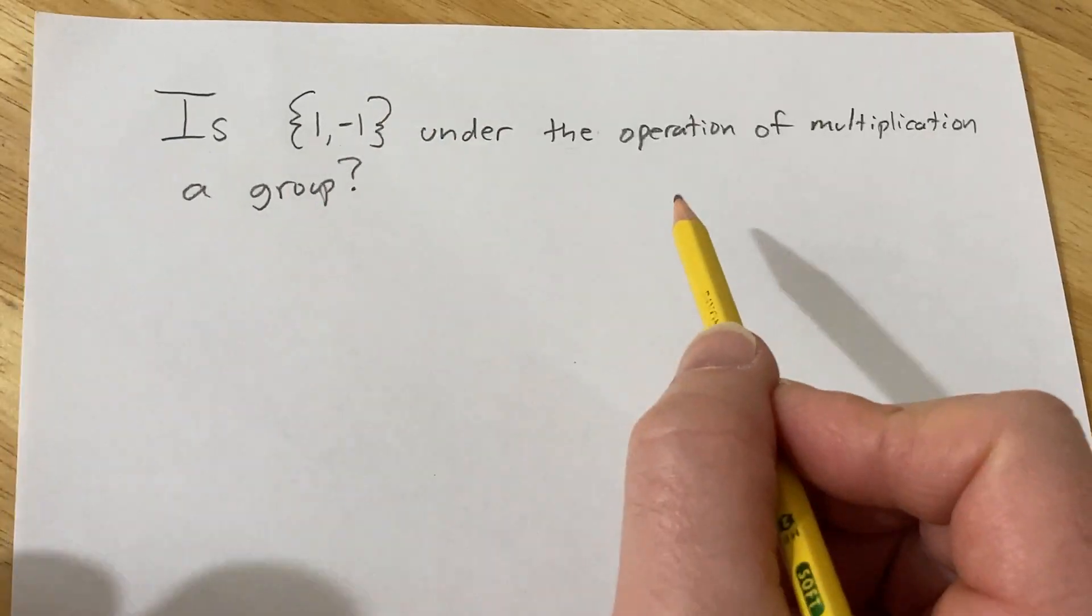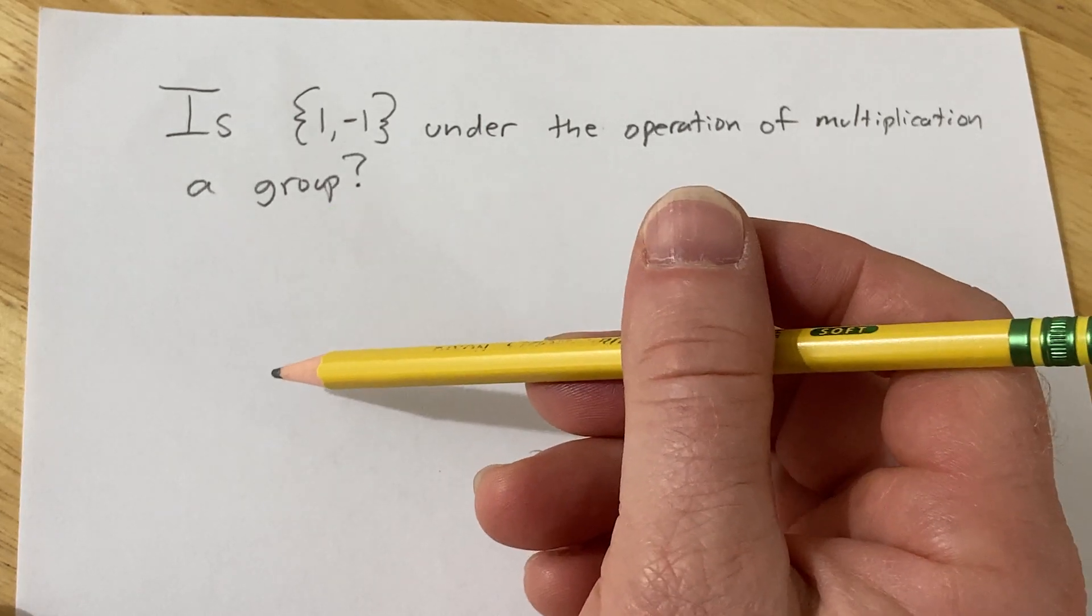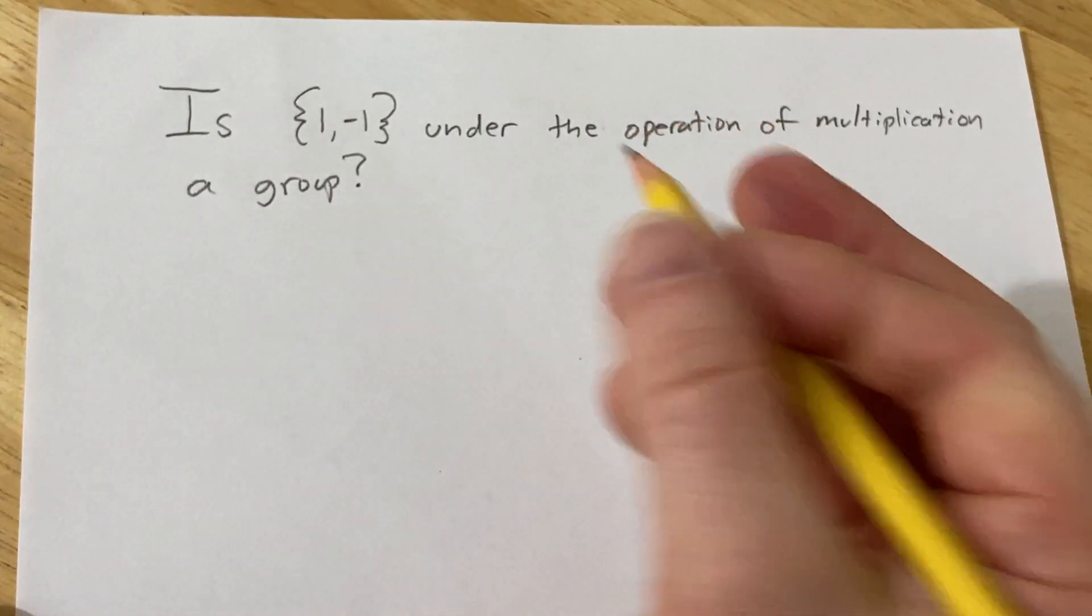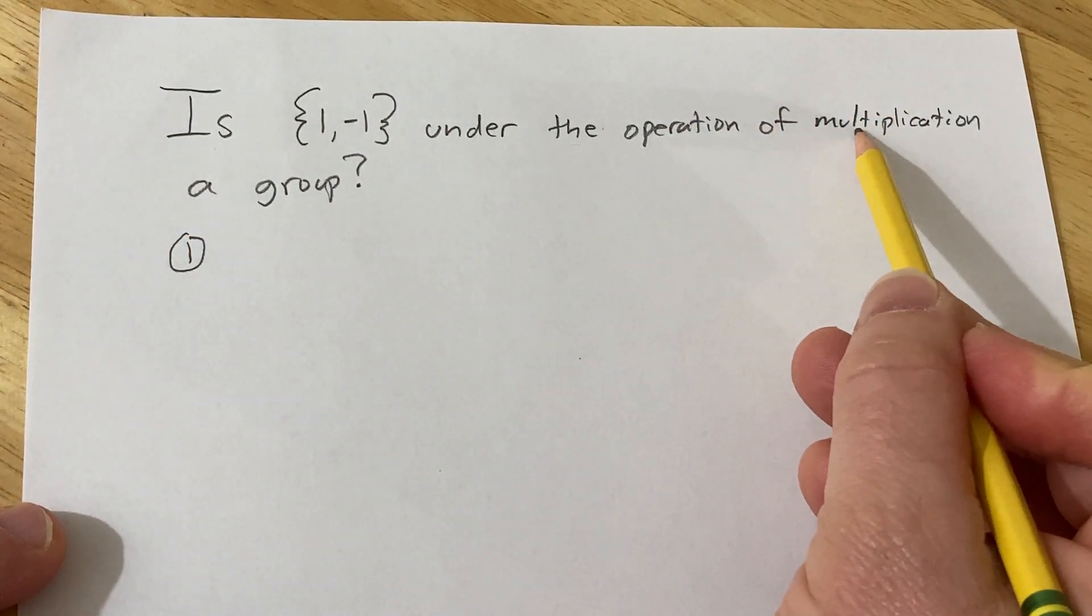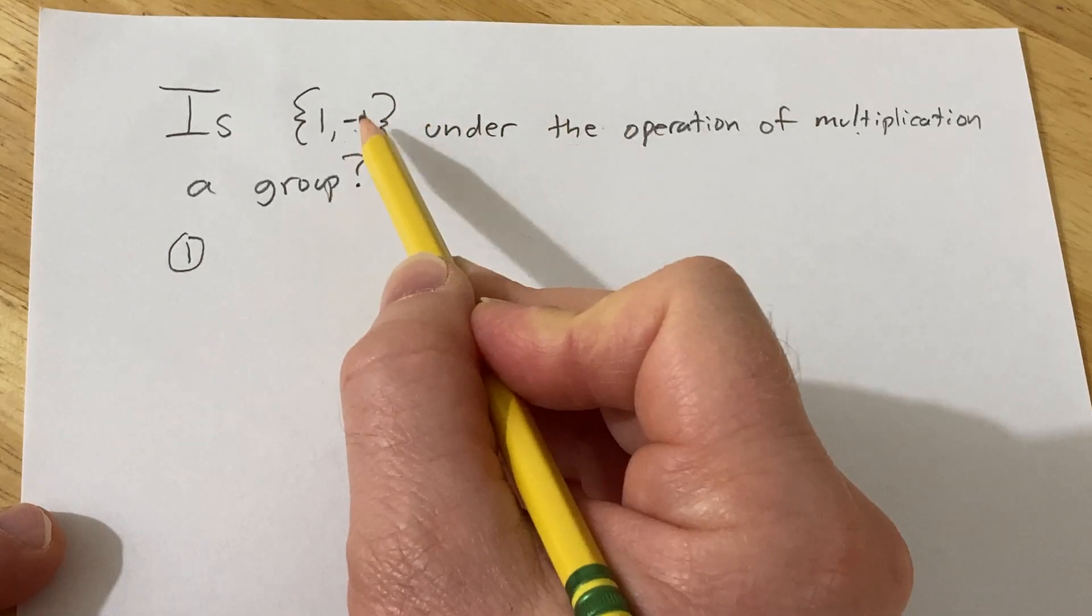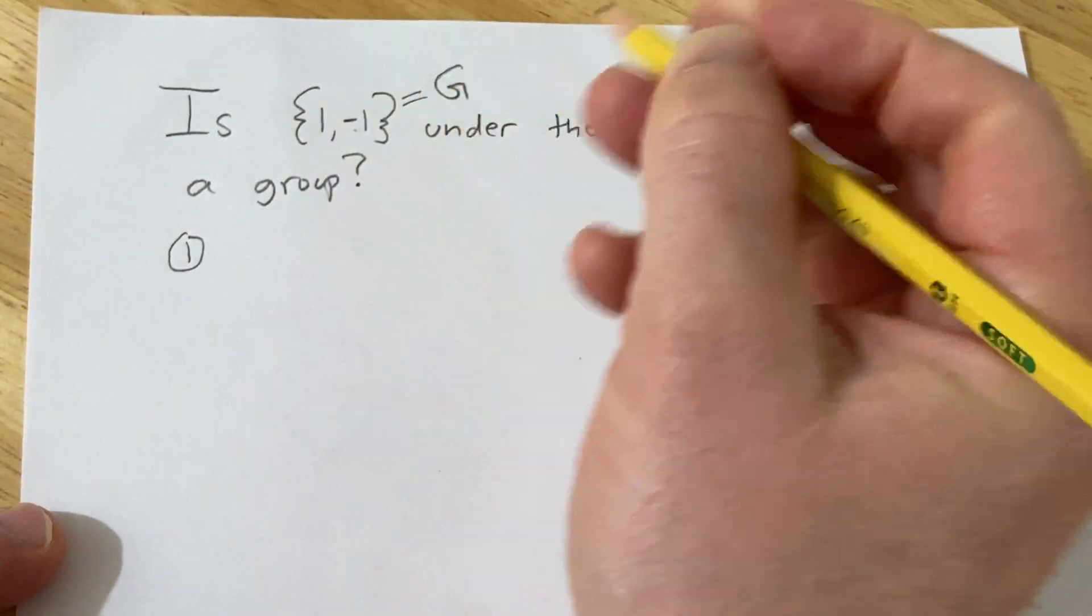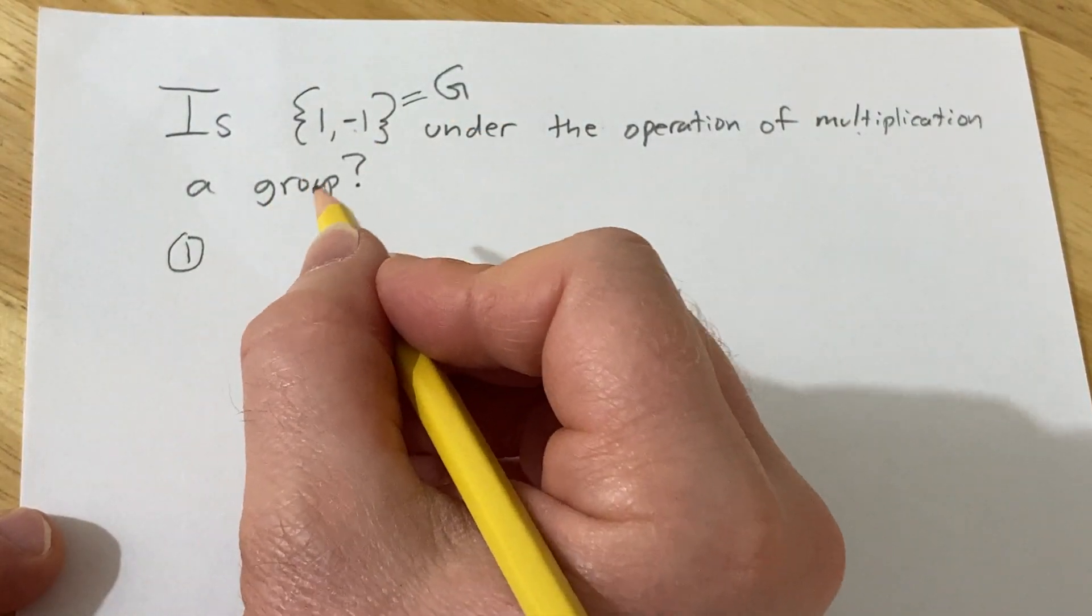So the answer is yes, and we're just going to go through and just briefly explain why each of the conditions required for it to be a group is valid. So the first thing we want to check is to see if multiplication is a binary operation on this set. So I'm going to call this g. And so now we're just going to check. So basically we're going to check every single product.